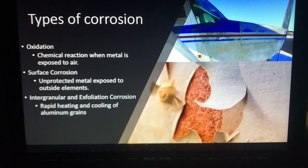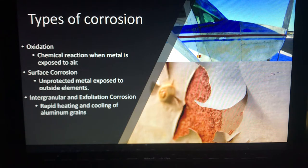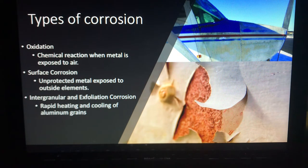There are a few different types of corrosion. You have oxidation, which is a chemical reaction when metal is exposed to air or oxygen. Surface corrosion is basically the metal being exposed to the elements, as well as intergranular and exfoliation corrosion, which involves rapid heating and cooling of the aluminum grains.